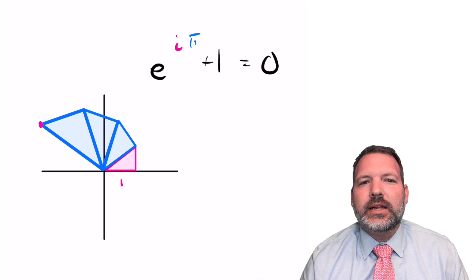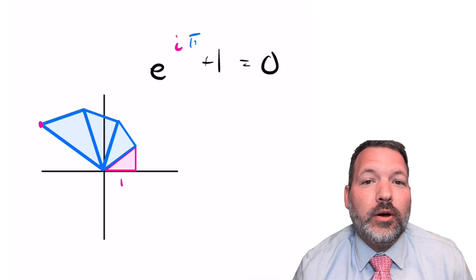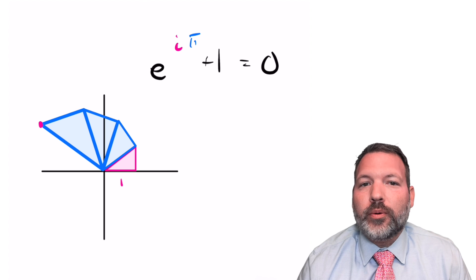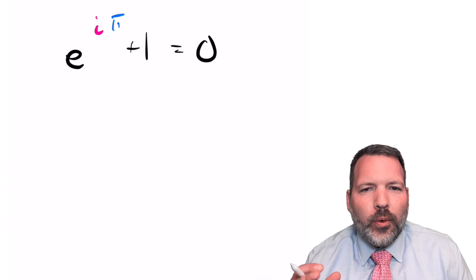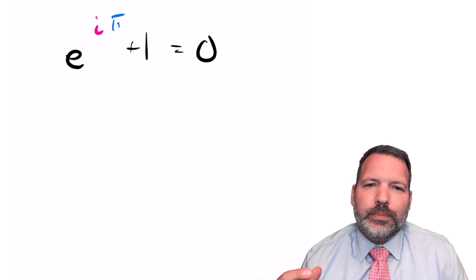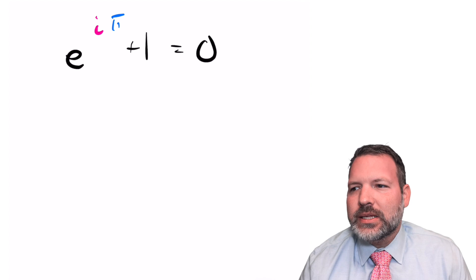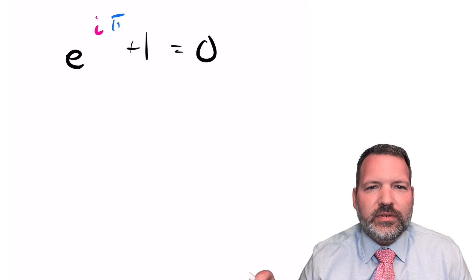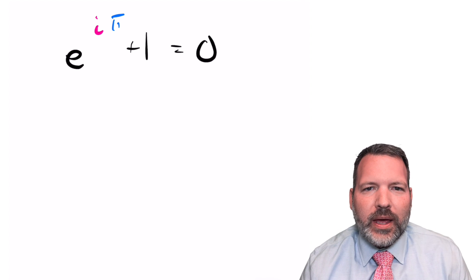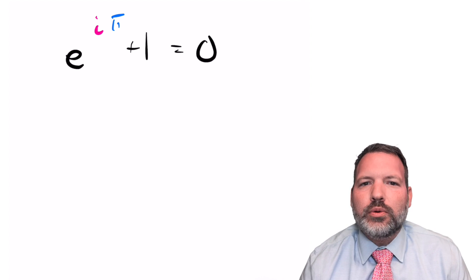Often called Euler's identity or Euler's formula, always called the most beautiful formula in all of mathematics. Euler's identity is so surprising because it brings together mathematical constants and operations from all kinds of different fields, all kinds of different mathematical developments into this one beautiful formula.